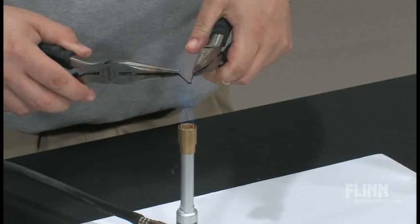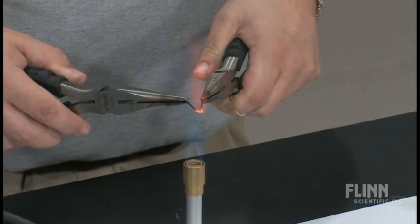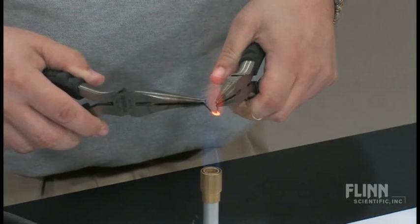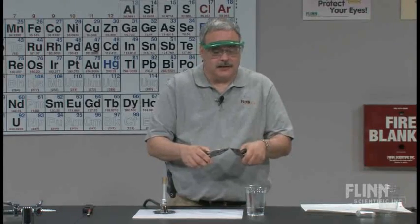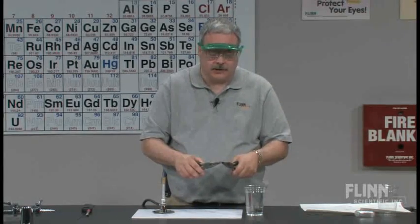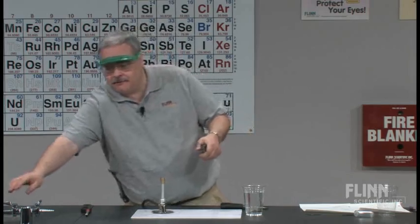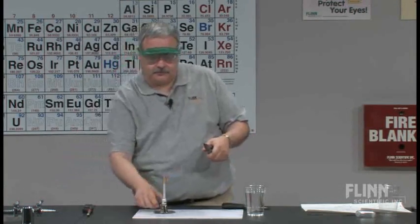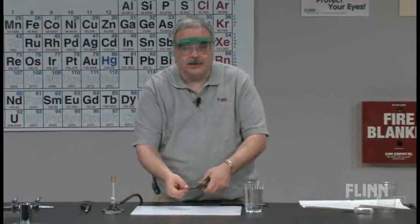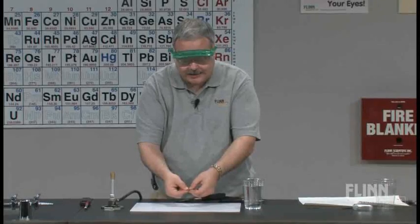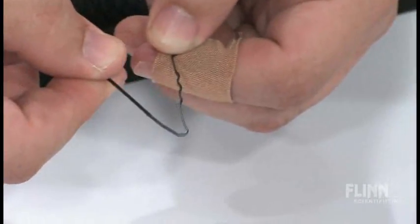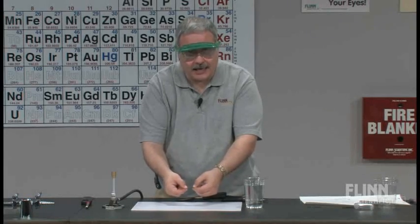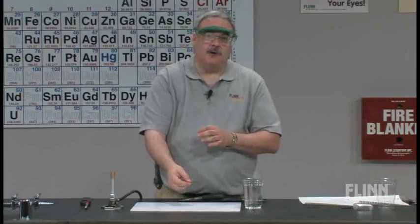I'm holding it right there — you can see some of the coating burning off, and it's now red hot. I'm going to take it out of the flame and just let it cool slowly. Steel takes a little while to cool, so I'll turn off the Bunsen burner just to be safe. Now watch — it's tough to see visually, but you can see it has lost some of its springiness. There has been a partial crystalline change, and that's why it lost some of its springiness.